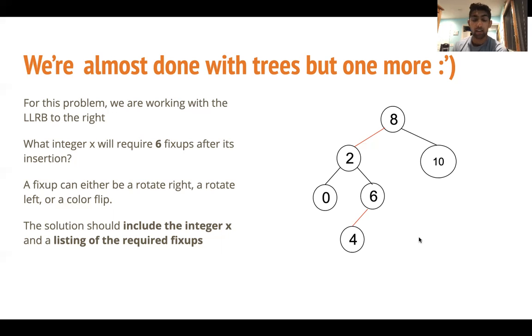So the first thing that we should notice is that six is a lot of fix-ups. Usually, any operation will only take maybe one or two fix-ups. So we want to try to figure out what number, when inserted, will take us the most work to make the tree correct again. So let's think about how we can maximize the number of fix-ups we need.